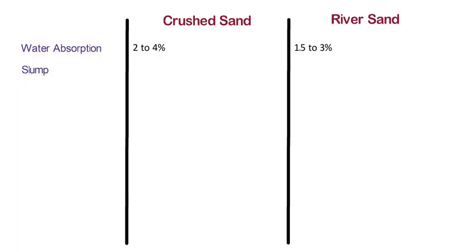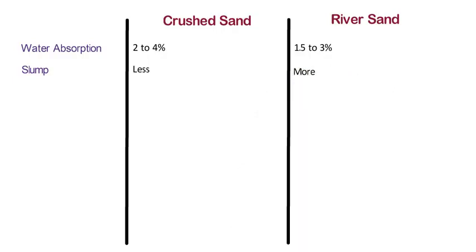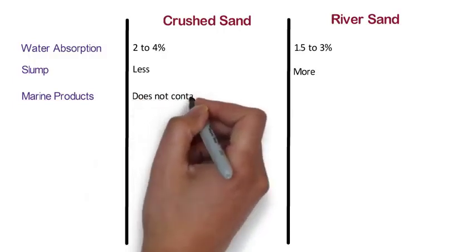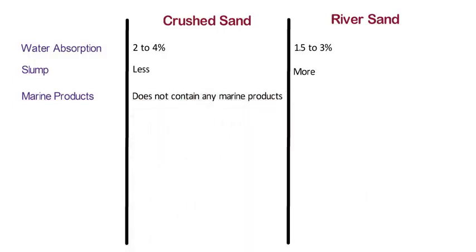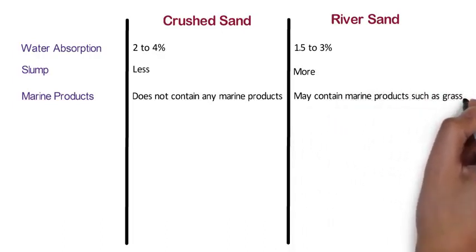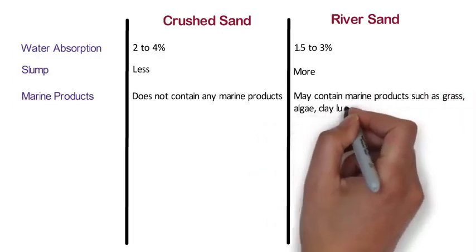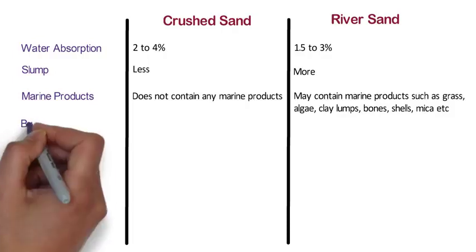Slump: The slump of crushed sand is less as compared to river sand, whereas the slump of river sand is more as compared to crushed sand. Marine Products: Crushed sand does not contain any marine products, whereas river sand may contain marine products such as grass, algae, clay lumps, bones, shells, mica, etc., which are harmful to the properties of concrete.